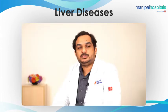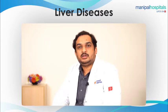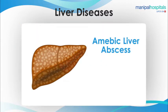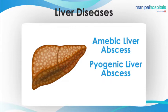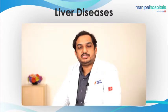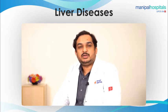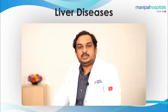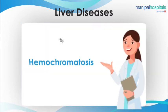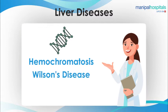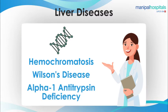There are some uncommon conditions which cause liver diseases like amoebic liver abscess, pyogenic liver abscess and some parasites. The second condition which damages the liver is genetics, where one abnormal or both abnormal genes are inherited from the parents. Some examples are hemochromatosis, Wilson's disease, and alpha-1 antitrypsin deficiency.